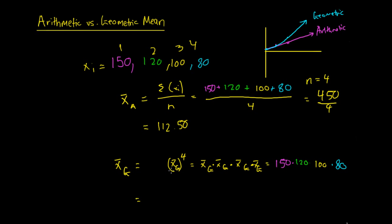So we say that x̄_g to the power of four equals 150 × 120 × 100 × 80. If we work that out on the calculator — 150 × 120 × 100 × 80 — we can see that equals 14,400,000 (14 million 400 thousand). So we have this number: if we multiply the geometric mean by itself four times, we get 14.4 million.